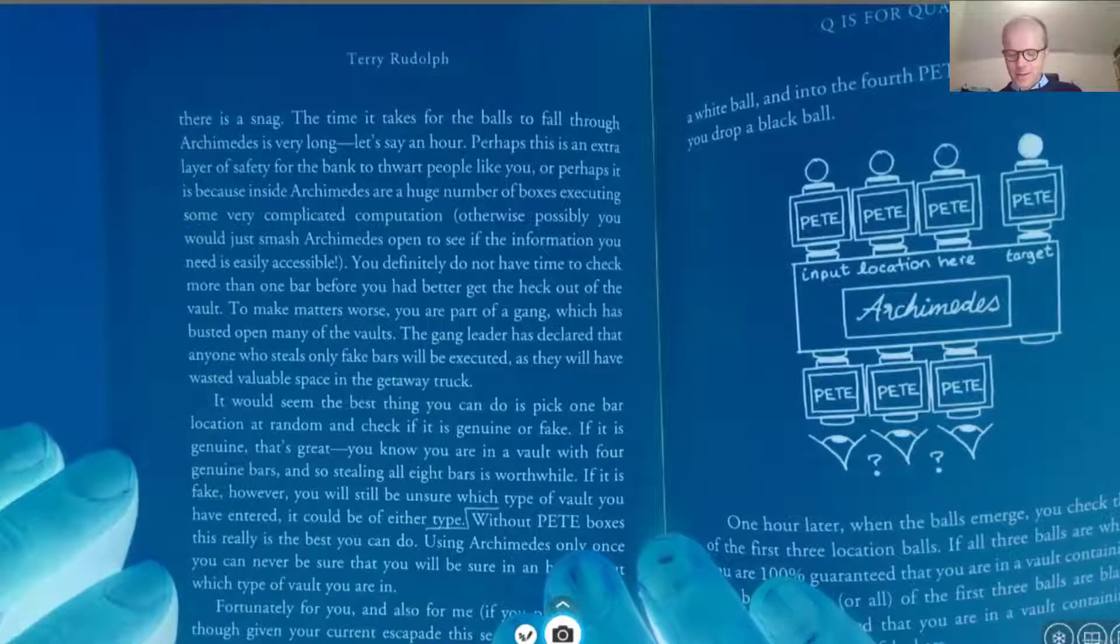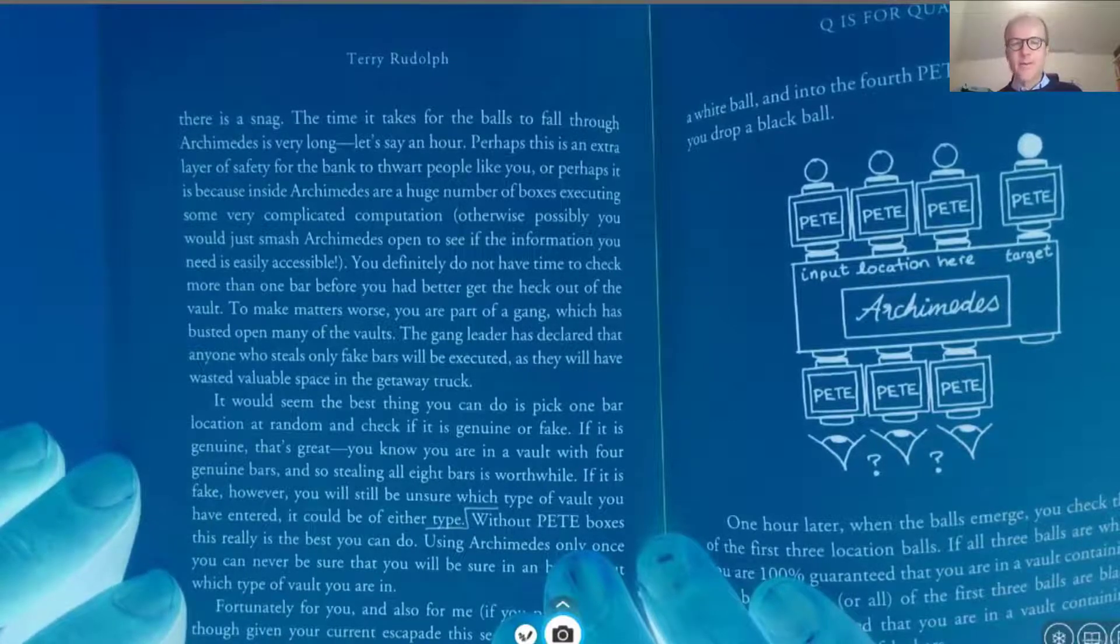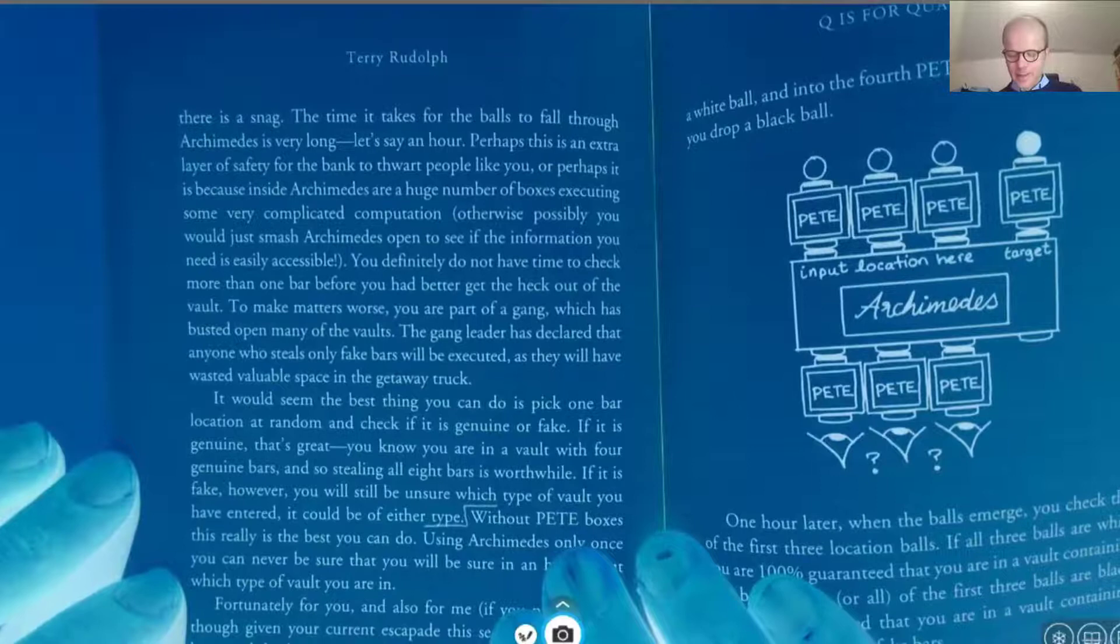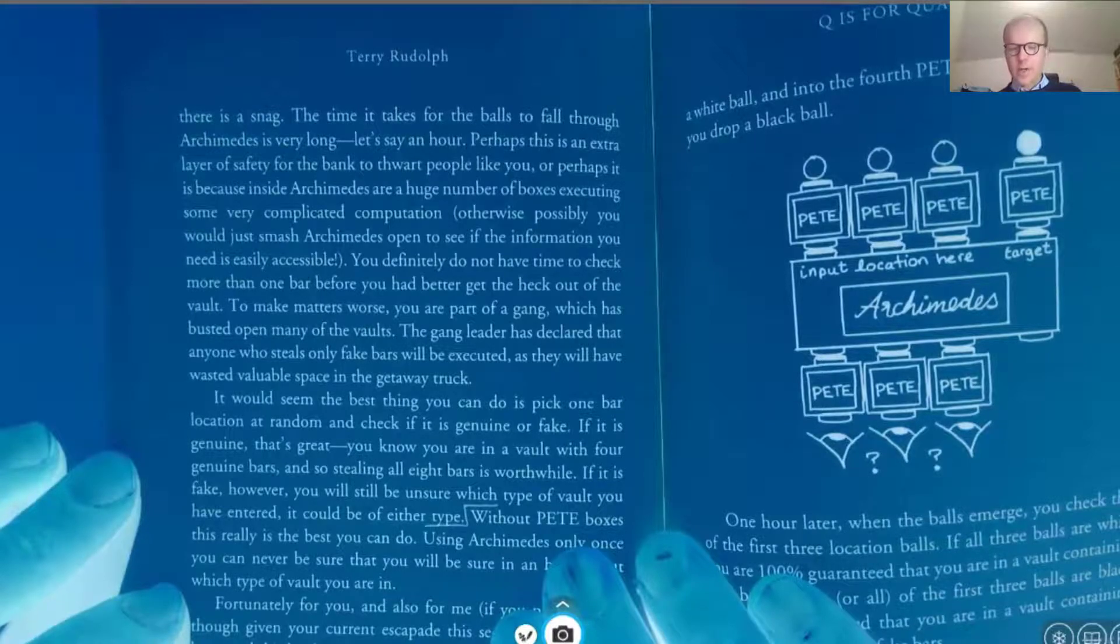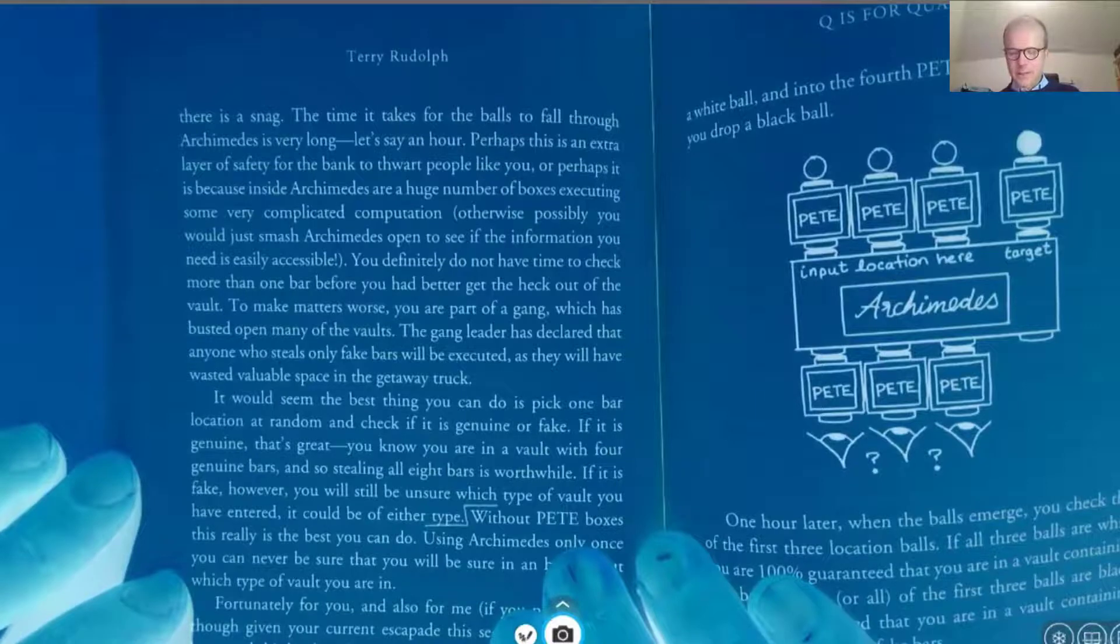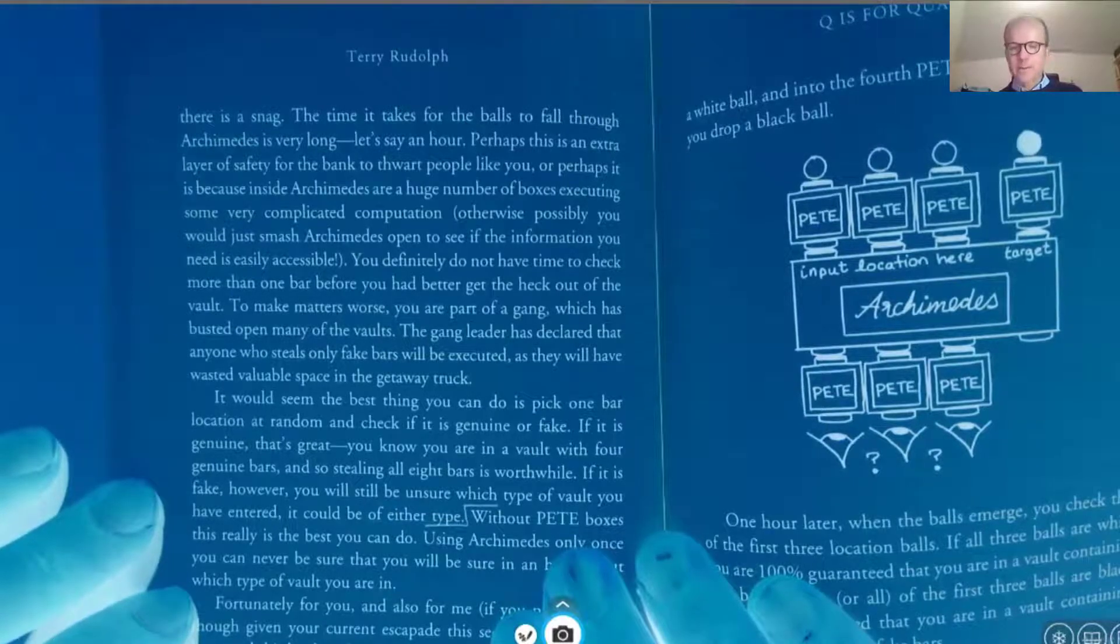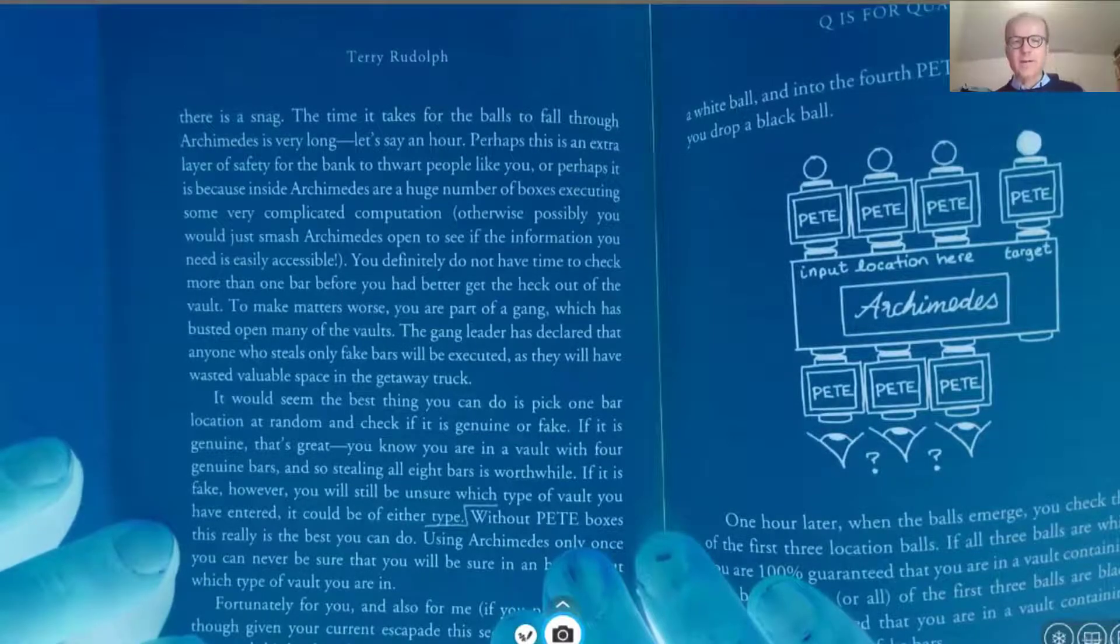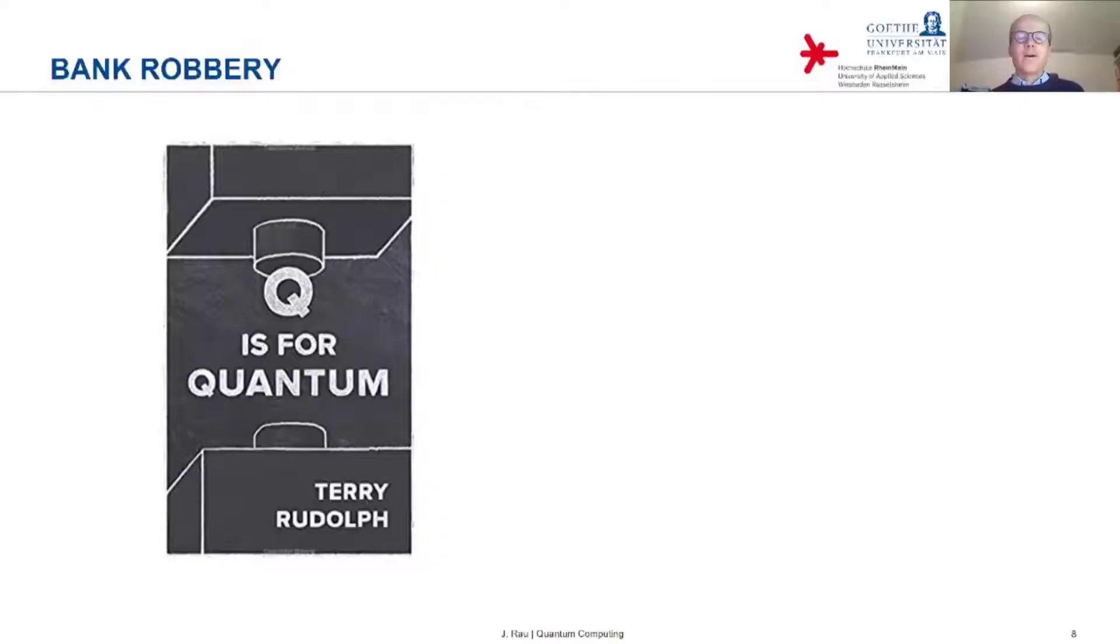To make matters worse, you are part of a gang which has busted open many of the vaults. The gang leader has declared that anyone who steals only fake bars will be executed, as they will have wasted valuable space in a getaway truck. It would seem the best thing you can do is pick one bar location at random and check if it is genuine or fake. If it is genuine, that's great. You know you are in a vault with four genuine bars, and so stealing all eight bars is worthwhile. If it is fake, however, you will still be unsure which type of vault you have entered. It could be of either type. So this is the story of the bank robbery.